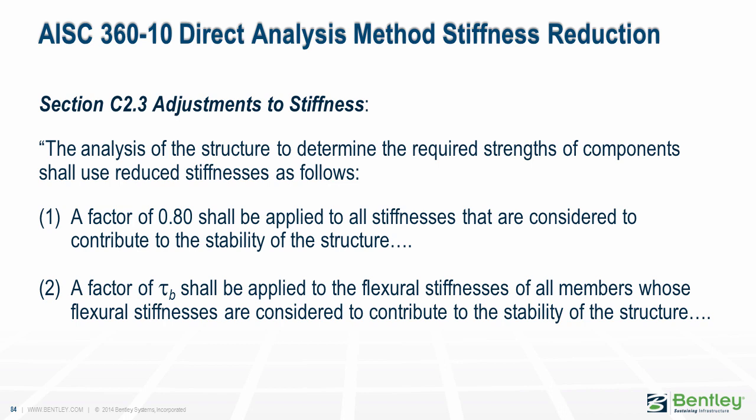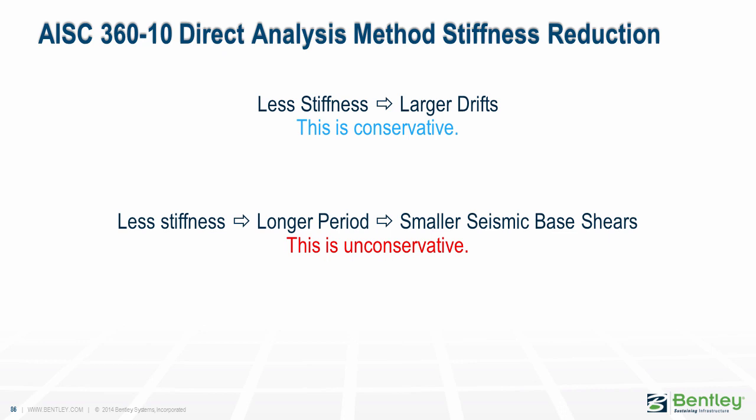Some discussion regarding the requirements in the direct analysis method of AISC 360 to use reduced stiffnesses in the analysis of steel structures. In this methodology, the stiffness of all members is reduced by a factor of 0.8, or 0.8 times tau sub b. Notice, however, that the specification explicitly says this is required when determining the required strengths of members. It is important to note that it is not required in the analysis used in the determination of drift and other serviceability requirements. The AISC stability committee did not intend that those stiffness reductions be applied when investigating serviceability such as drift, or in the determination of periods, base shear, etc. They only intended that those stiffnesses be used in the analysis to determine member and component design loads.